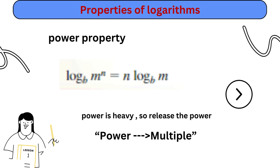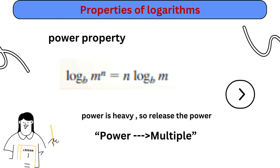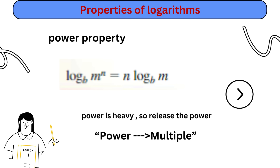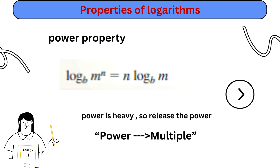Power property of logarithm: log of m to the power n, to base b, equals n multiplied by log of m to base b. Here n is the power of m, meaning it is heavy over m; hence remove the power as a multiple of the log function. Remember the phrase: power form — use multiple of log function.